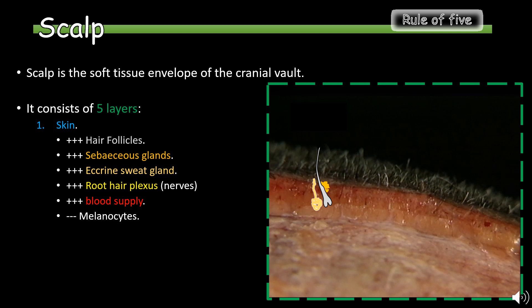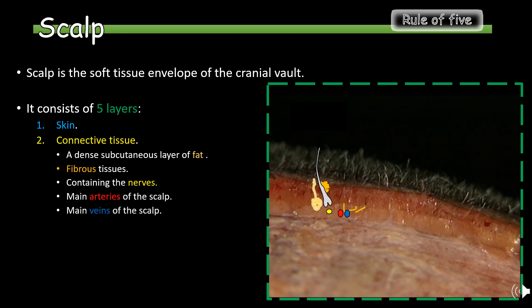Eccrine glands are the major sweat glands of the human body. The skin also contains the root hair plexus, which are the nerves surrounding the base of each hair. Like most tissues and organs, the skin has its own blood supply. Last but not least, the skin layer of the scalp has cells called melanocytes, which are responsible for pigmentation by producing melanin.